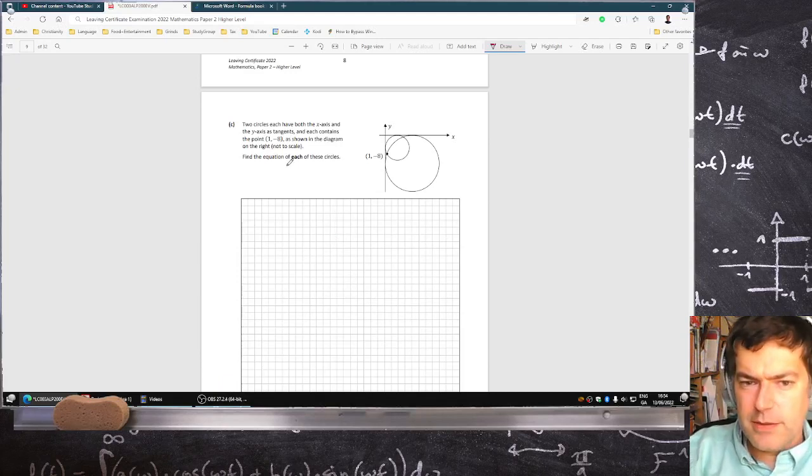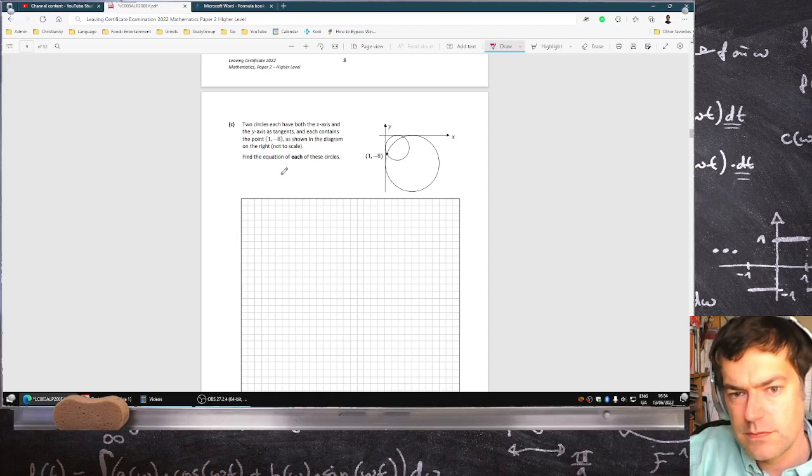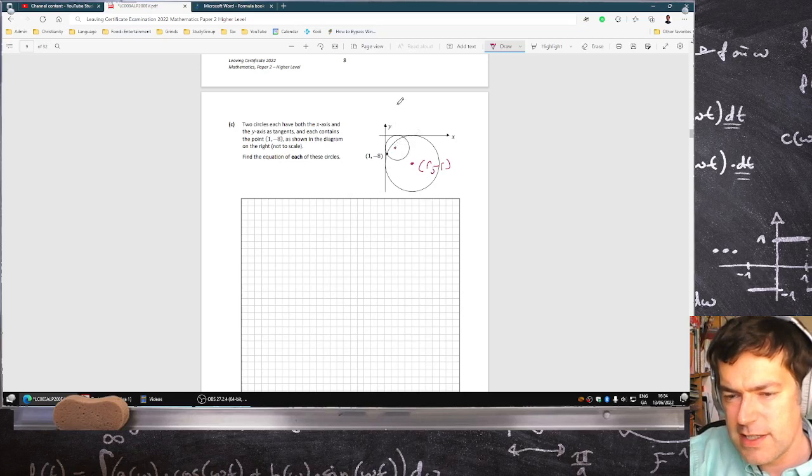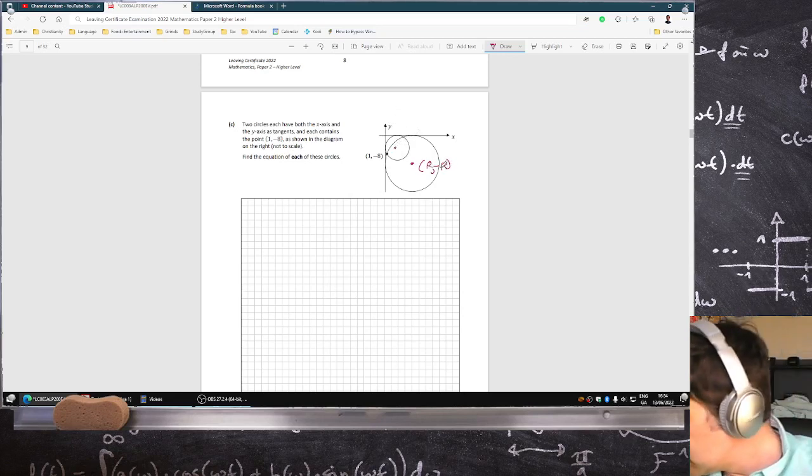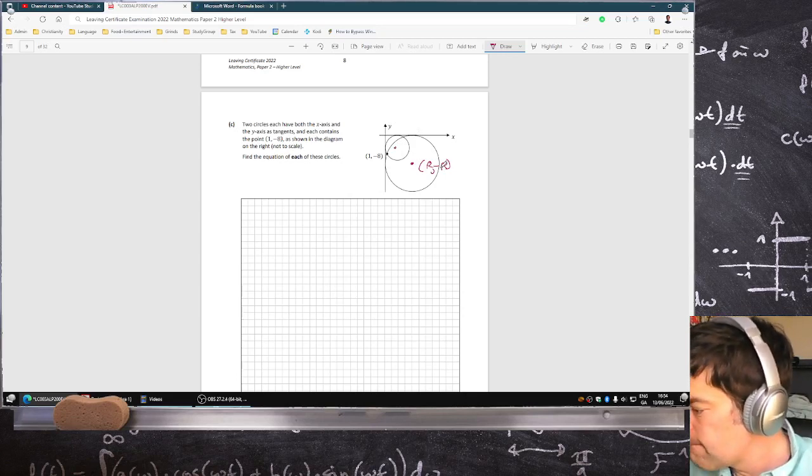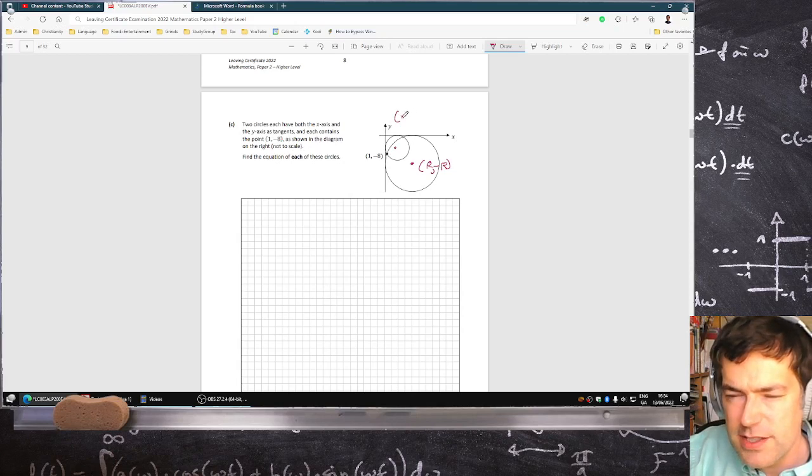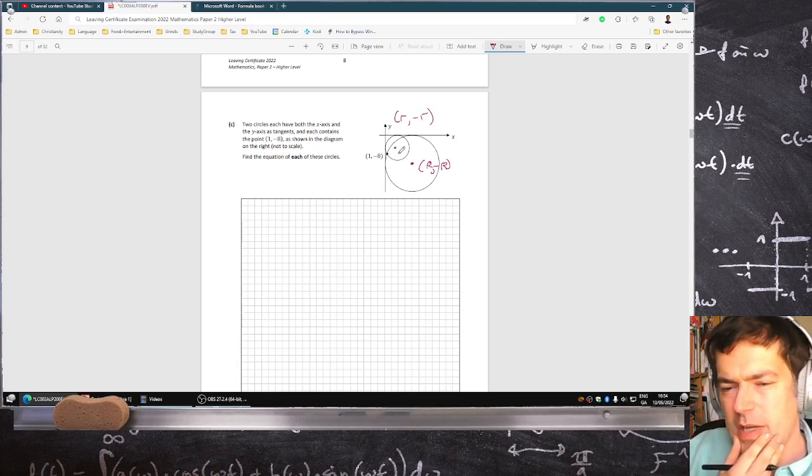So the trick here is to realize that this circle has its center at r minus r, and this circle here has its center, well, it'll be a different radius, so maybe I should call that capital R. Sorry, r and minus r. Come out r and down, minus r.